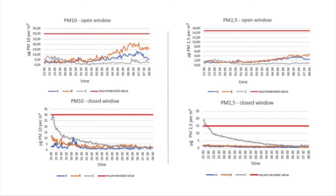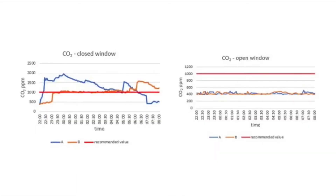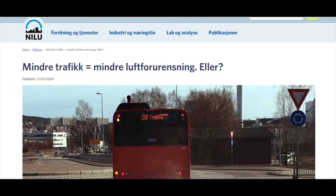The closed window measurements show low particle values throughout the night except at location C. Location C started with high PM values but these decreased during the night and stabilized at almost the same level as locations A and B. It is concluded that a source polluted throughout the day — possibly the construction of a school being built near location C. CO2 levels were much higher with windows closed and passed the National Institute of Public Health's recommended levels for indoor climate. Additionally, the amount of airborne dust rose above normal in Oslo during this period due to dry weather, which may have affected the results.